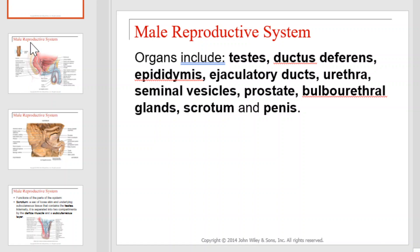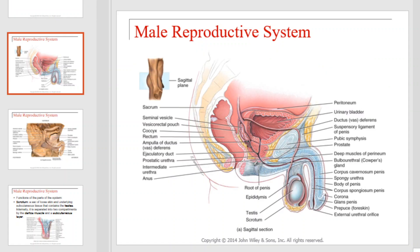We'll introduce the male reproductive system. Its organs include the testes, ductus deferens, epididymis, ejaculatory duct, urethra, seminal vesicles, prostate, bulbourethral gland, scrotum, and penis. This graphic illustrates each of those organs in their correct anatomical location.